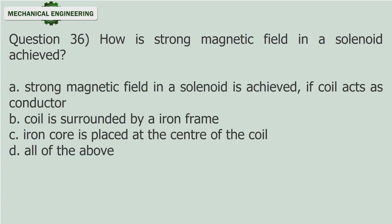Question 36: How is a strong magnetic field in a solenoid achieved? A. Strong magnetic field in a solenoid is achieved if the coil acts as a conductor. B. Coil is surrounded by an iron frame. C. Iron core is placed at the center of the coil. D. All of the above. Answer: All of the above.